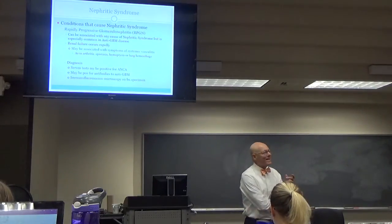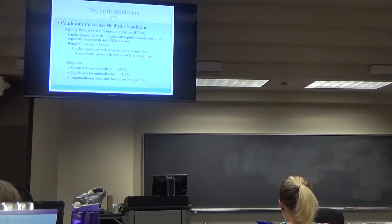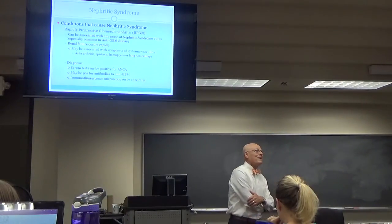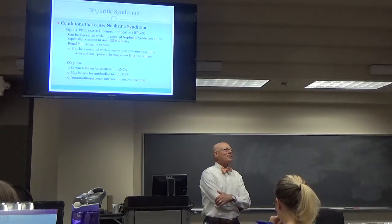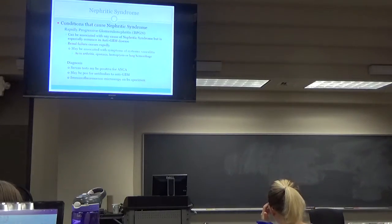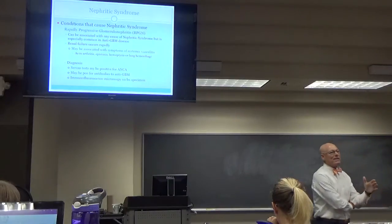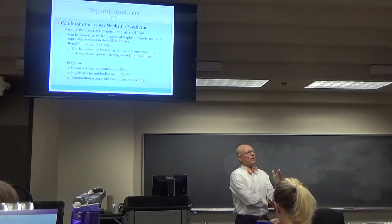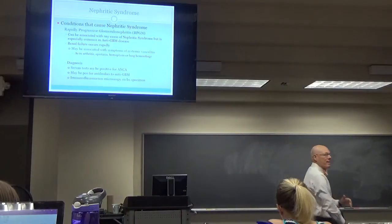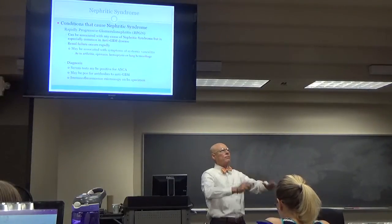Conditions causing nephritic syndrome: the first is rapidly progressive glomerulonephritis — RPGN. It can be associated with any cause of nephritic syndrome. This term only defines the fact that it happened very fast — it doesn't specify the pathology. It just means it was rapid and aggressive. Renal failure occurs rapidly; patients may present in anuria, saying 'I've stopped peeing.'